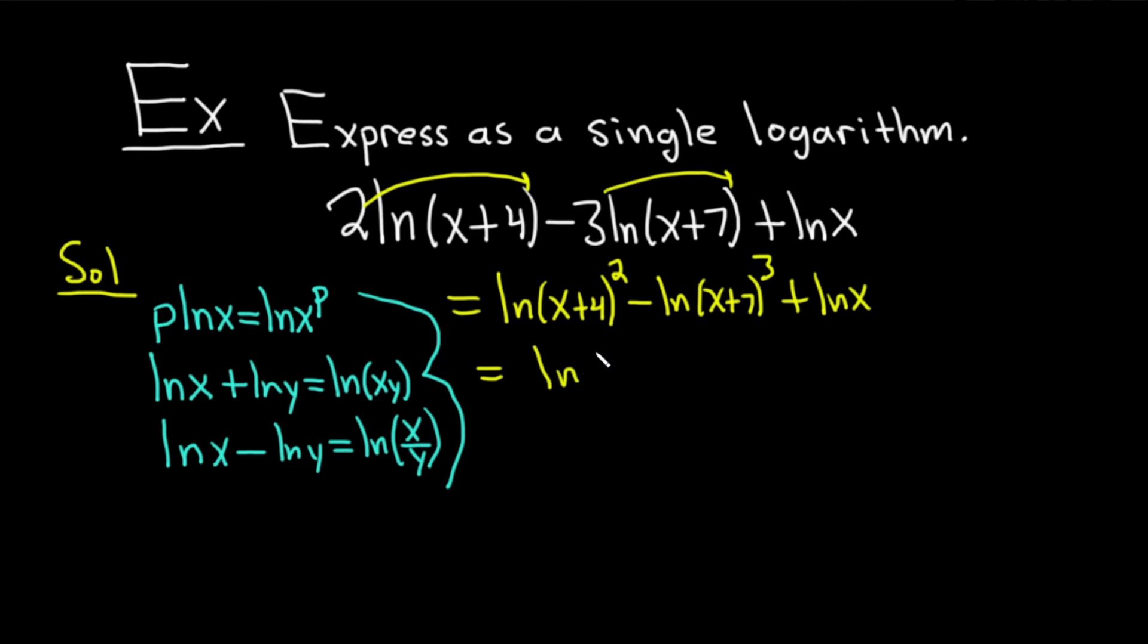Now we can apply the quotient rule. So we have the natural log of, in the numerator, we have (x+4)^2. And in the denominator, we have (x+7)^3. And then we still have this little straggler of this plus ln(x). It's just kind of hanging out. So recap.